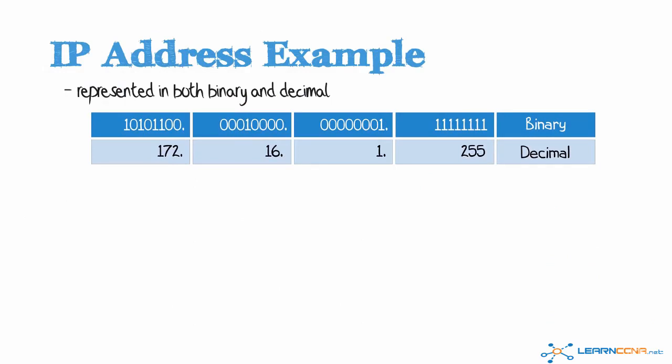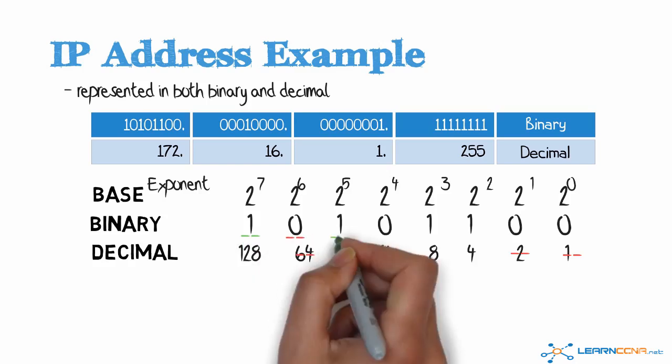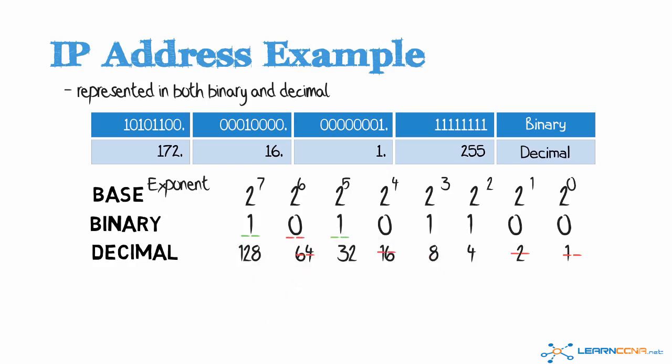Using our table, the first bit is set on, so that's the equivalent of 128. Second bit is off. Third bit is on, which equates to 32. Fourth bit is off. Fifth bit is on, equates to 8. Sixth is on, equates to 4, and the last two bits are set off.